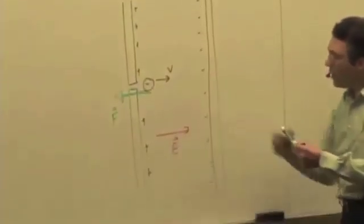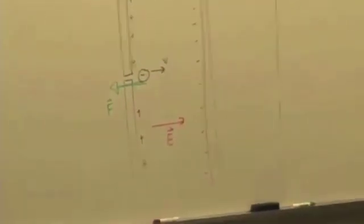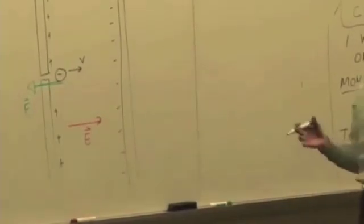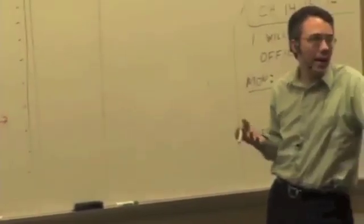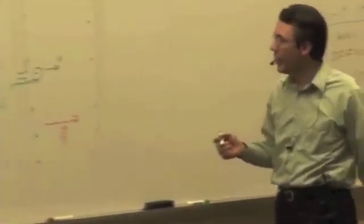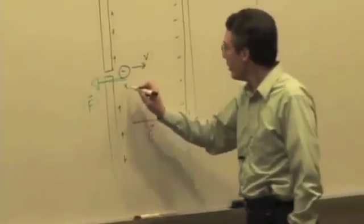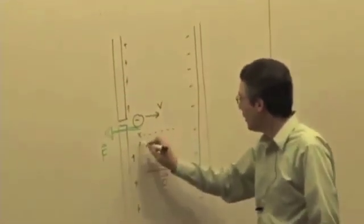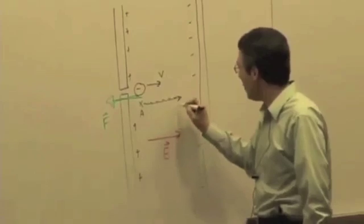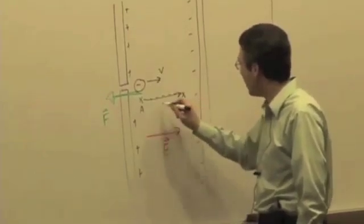So as the electron moves from left to right, it's going to be slowing down, right? Kinetic energy will decrease. The work, if the displacement is again from A to B, provided it can get to B.